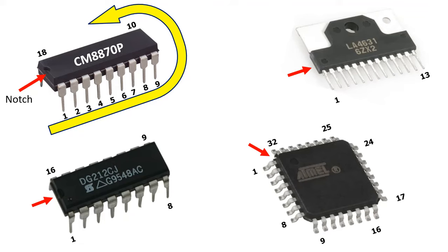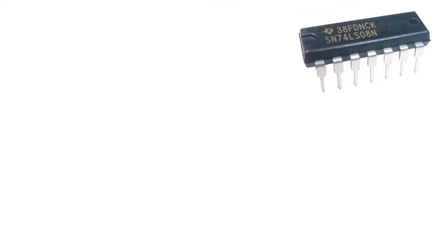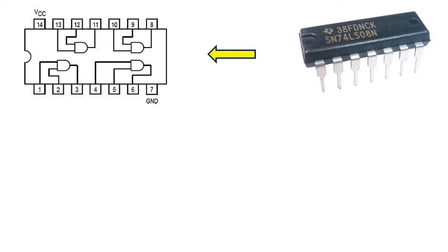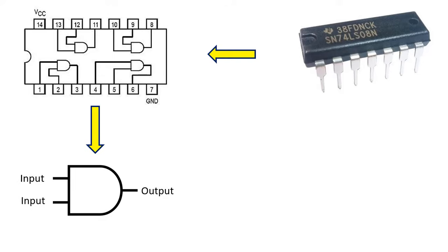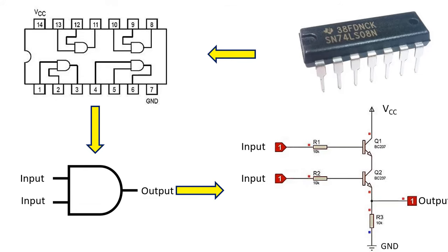Now let's look at what the internal structure of an integrated circuit is like. For example, let's look at how the internal structure of the 74LS08 integrated circuit is arranged. As you can see, this IC has a total of 14 pins. When we look at the internal structure, we see that there are 4 logic AND gates. This logic gate has 2 inputs and 1 output. If both inputs are logic 1, that is 5 volts, the output becomes logic 1, that is 5 volts. If any of the inputs is logic 0, the output is logic 0. When we go into a little more detail and look inside a NAND gate, we can see that there is a circuit consisting of two transistors and resistors inside this gate.